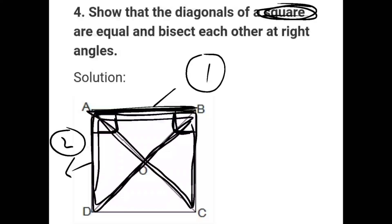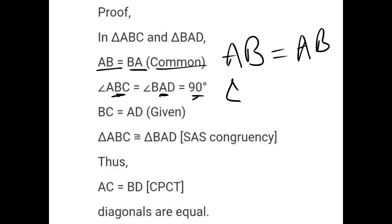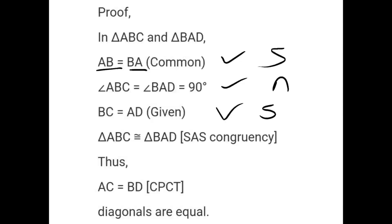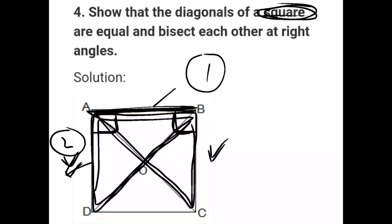Next, let's see. We can write that BC equals AD — given by the square. So a square means each side is equal. BC is equal to AD — given. We can write: sides of a square. This means we can prove three conditions: number one is a side, number two is angle, number three is side. So the SAS rule is applied.